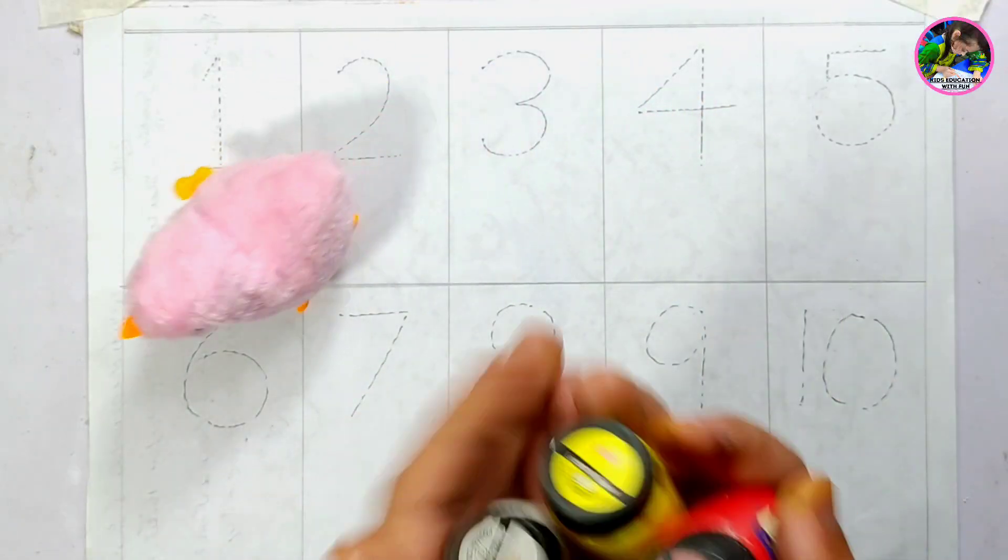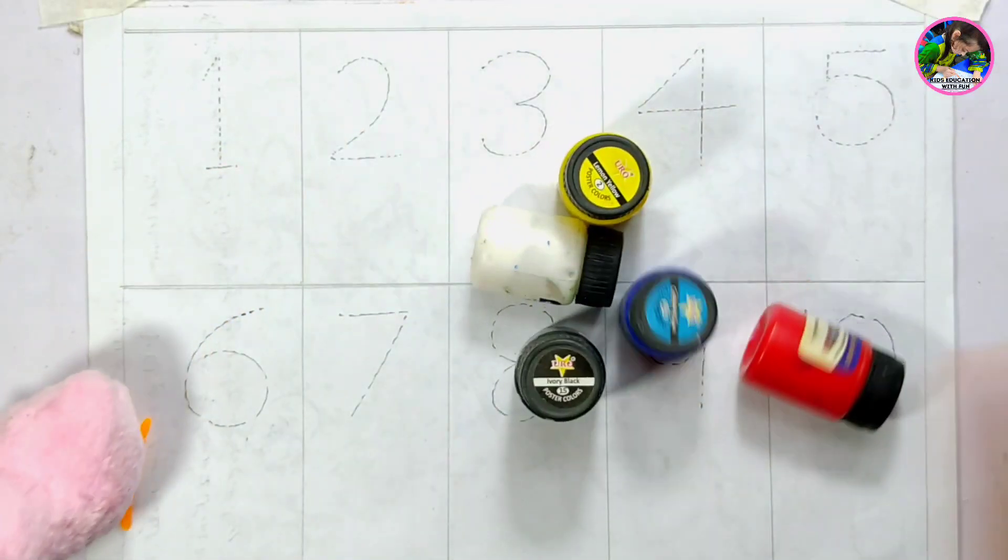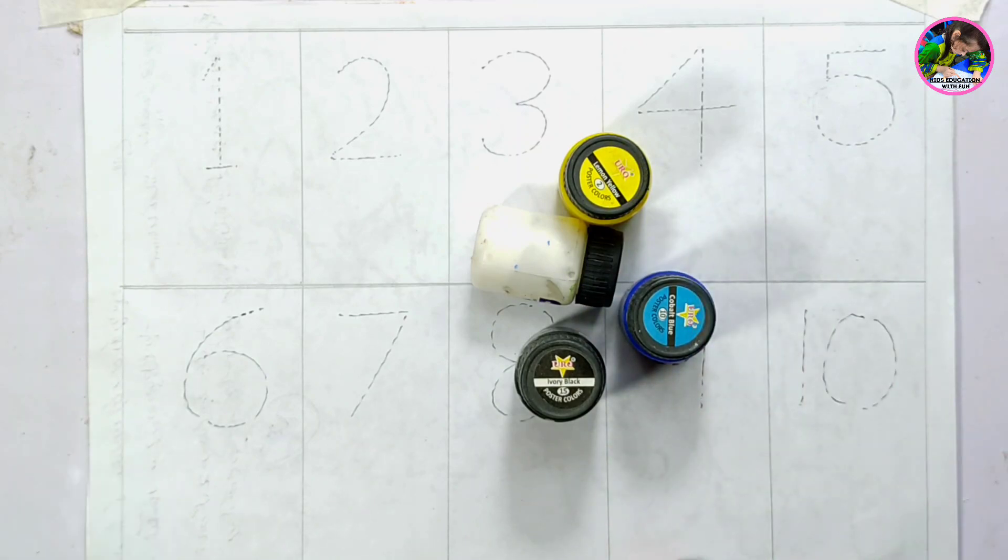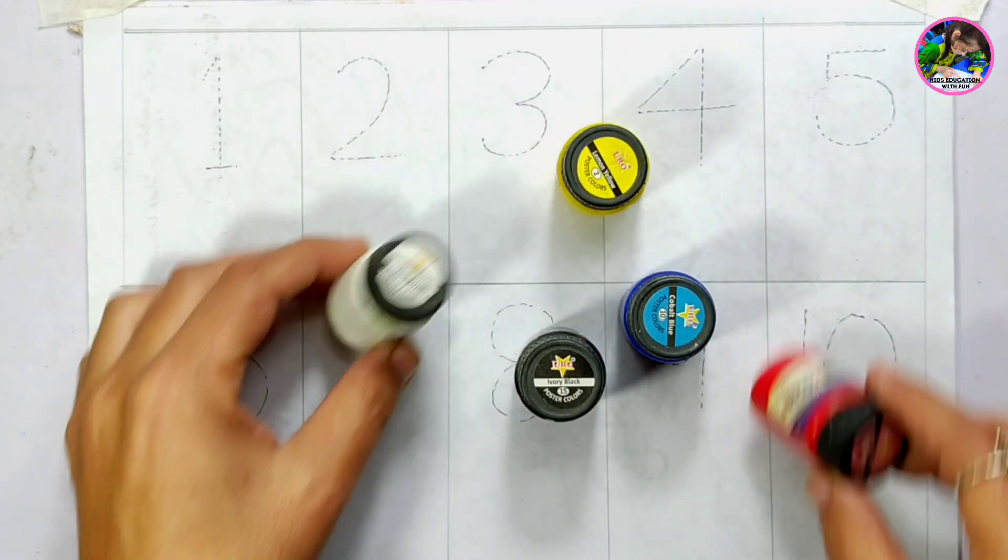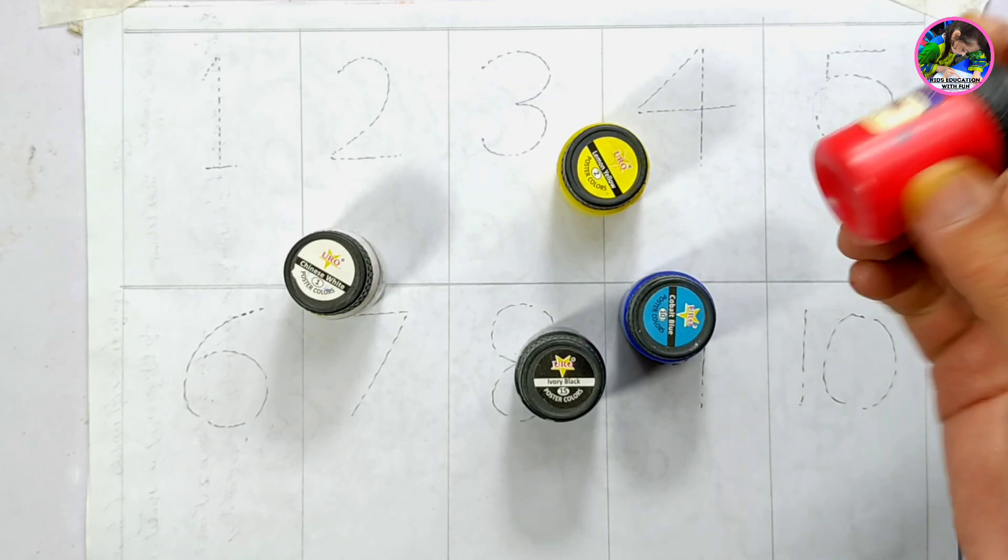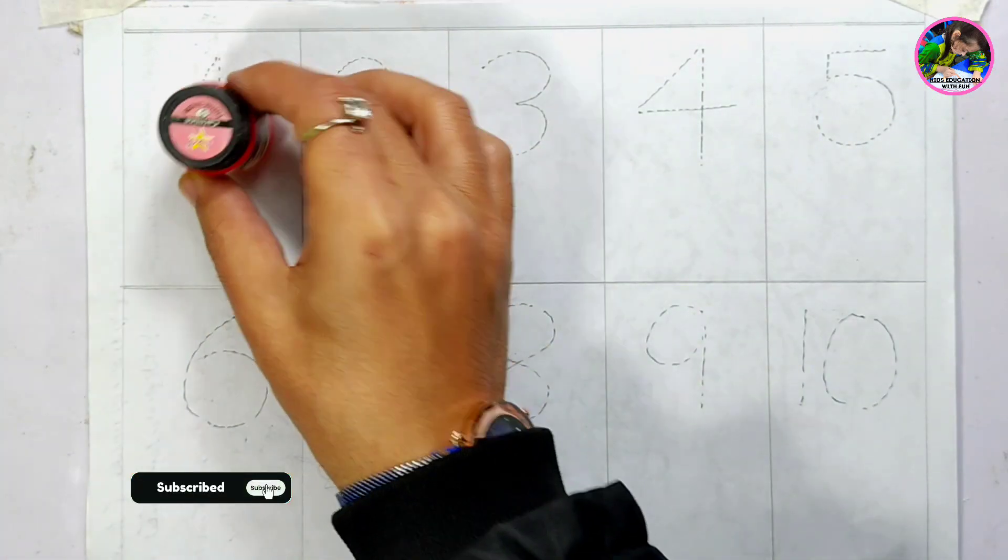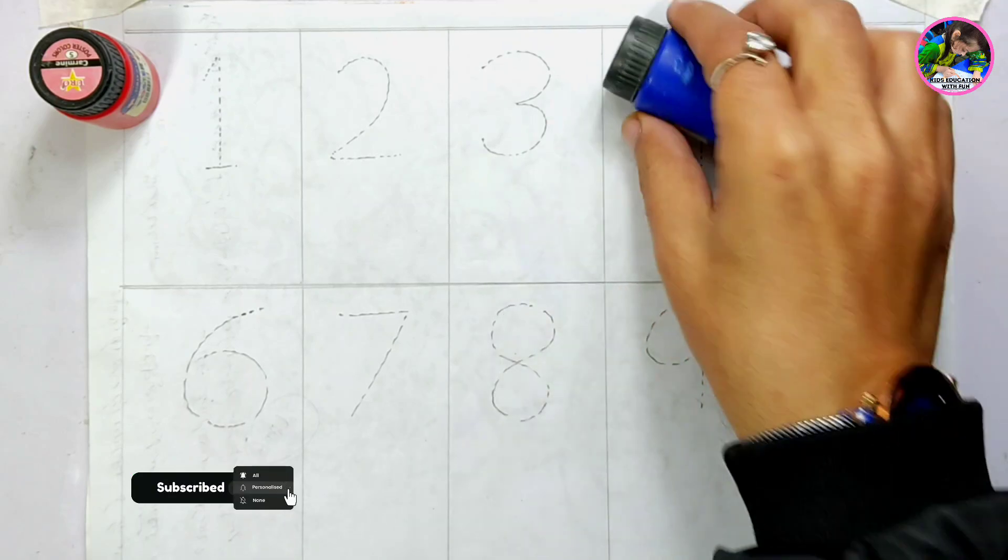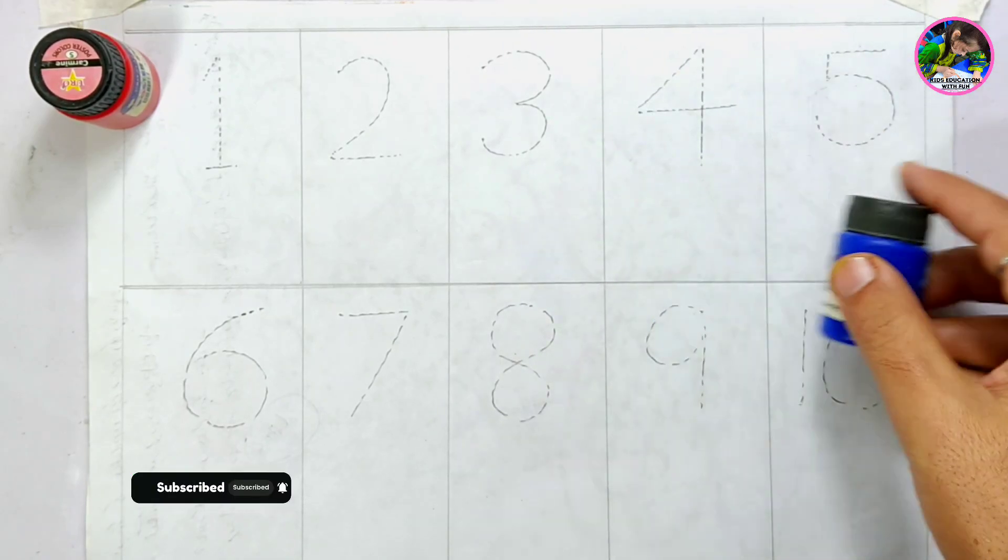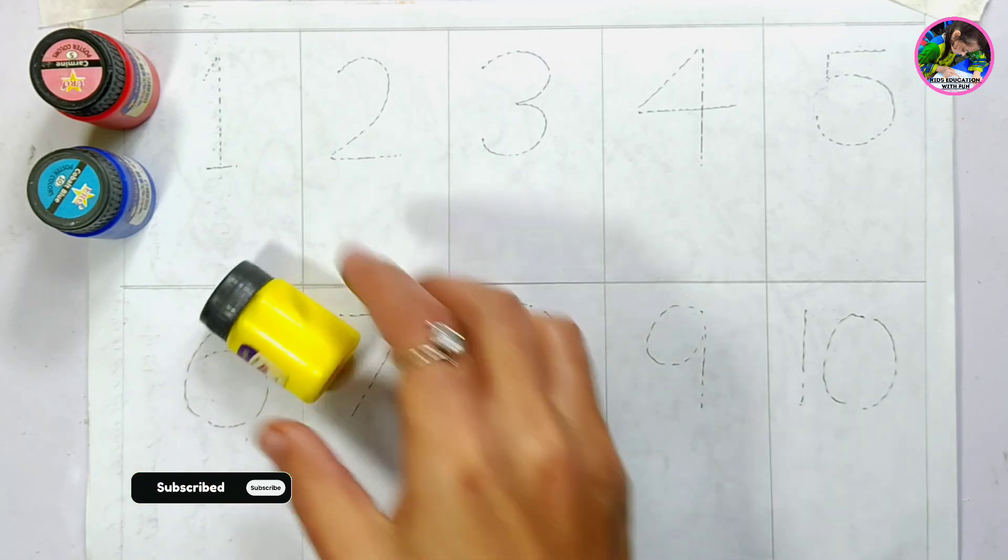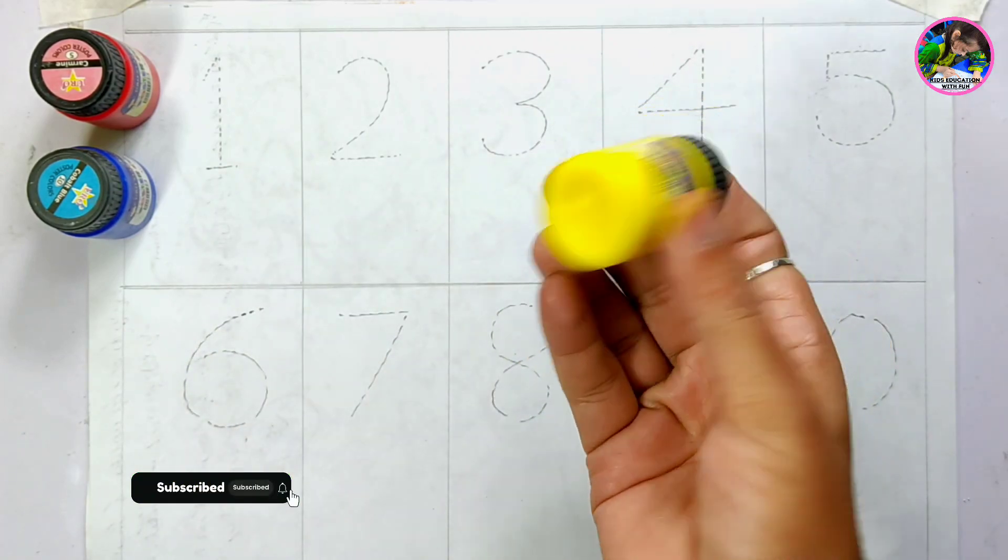Hello kids, welcome to Kids Education with Fun. Let's learn the colors. We have different colors here: red color, this is red color, this is dark blue color, here we have yellow color.